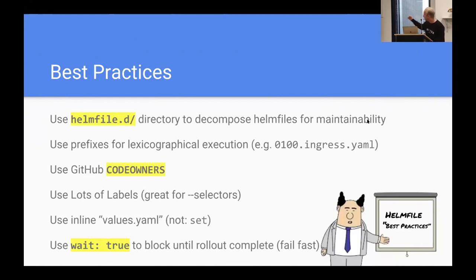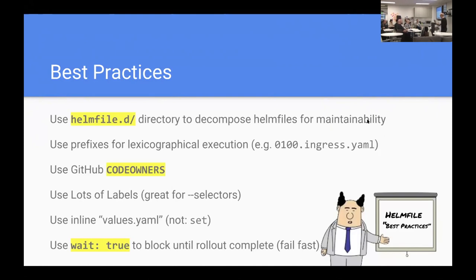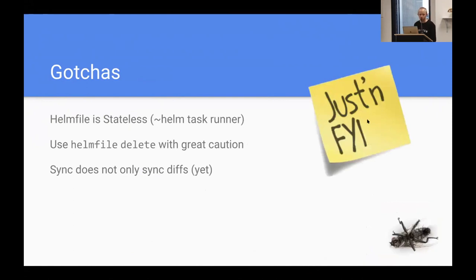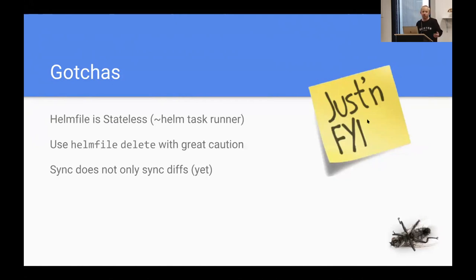The wait: true option is a recent addition. By default, releases are deployed asynchronously — it deploys everything at once. But I like the idea of failing fast: deploy one at a time, and if it fails, abort the whole process — that's what wait: true helps you achieve. Helmfile is entirely stateless, so if you're editing your Helmfile and removing resources, it doesn't know about that. You can easily delete things from the cluster by calling helmfile delete — but beware. When you call helmfile sync, it's always applying all changes every time by calling helm upgrade, but if there were no pending changes, it makes no difference.